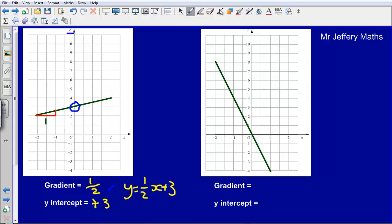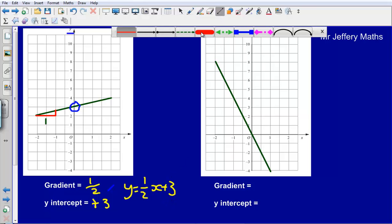Next one, here you can see that we're going to have a negative gradient, because when we're moving along by one on the x-axis, we're moving down on the y-axis.